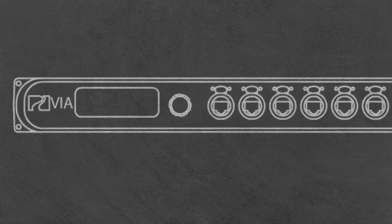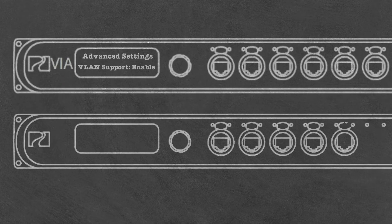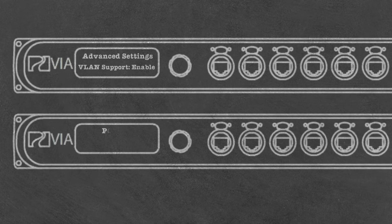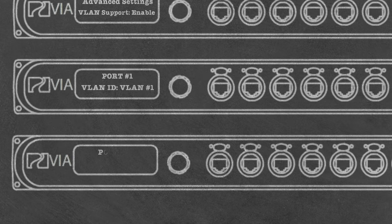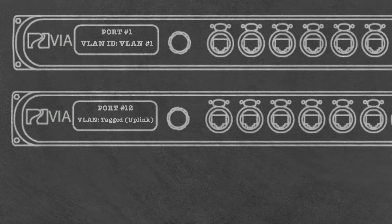Setting up the VIAs for VLANs is simple. Using the front panel, go to advanced settings and enable VLAN support, then dial to each port and choose which VLAN it should be a member of. For ports that connect switches together, simply mark them as tagged, and those lines will pass data for all VLANs.